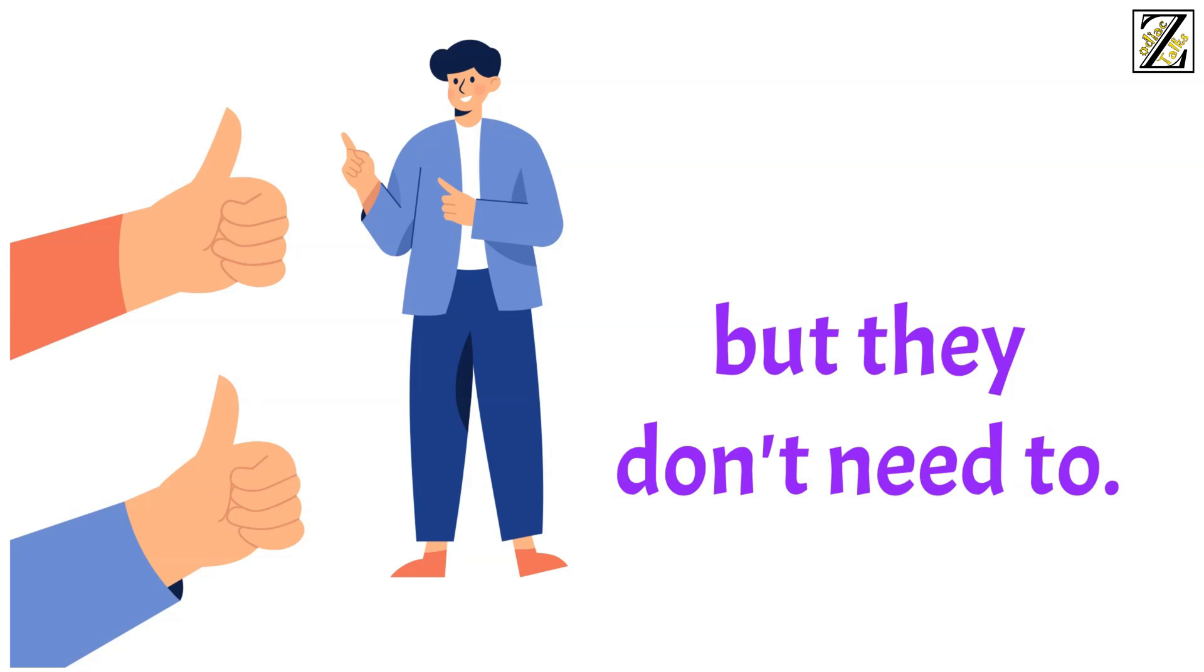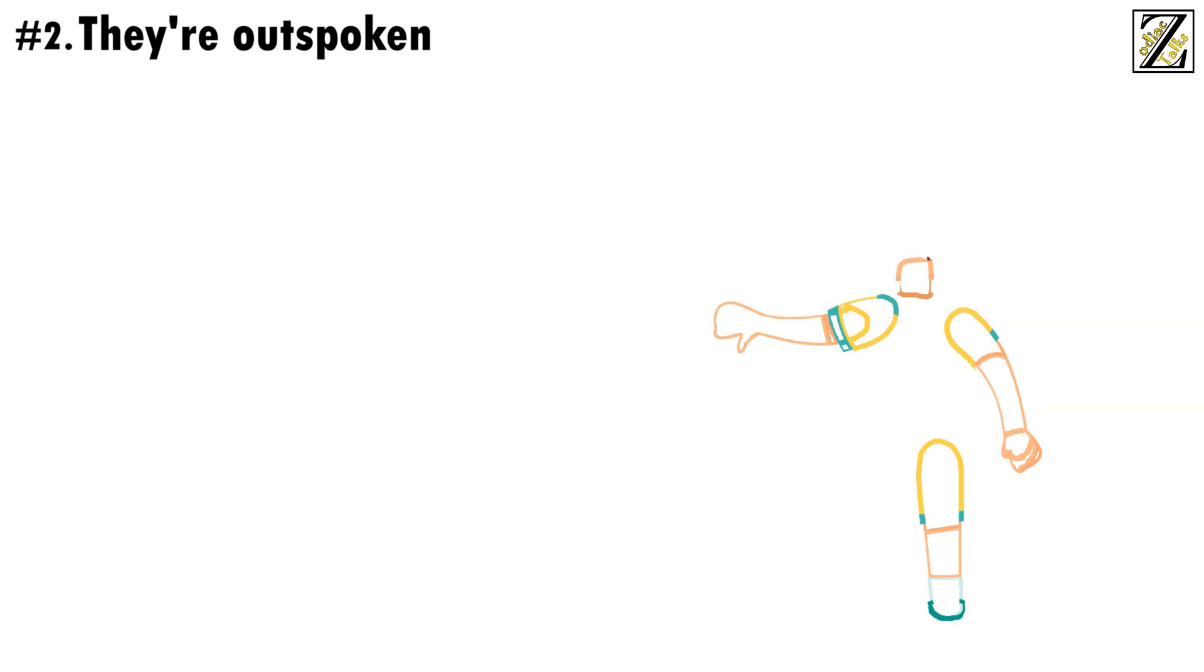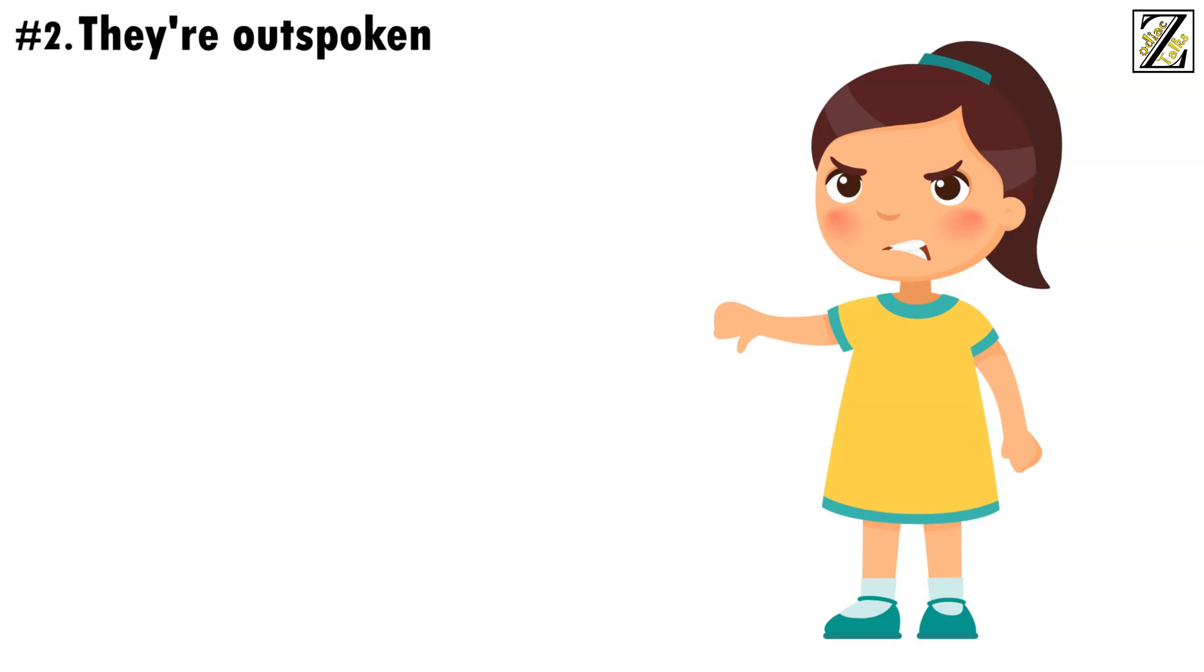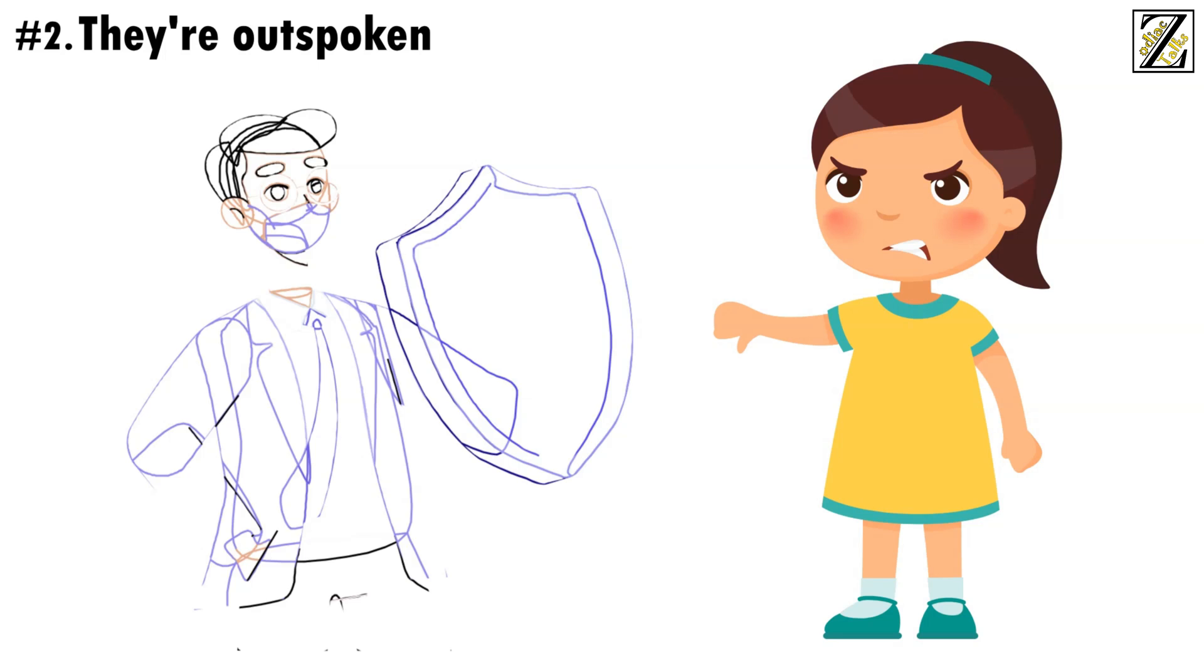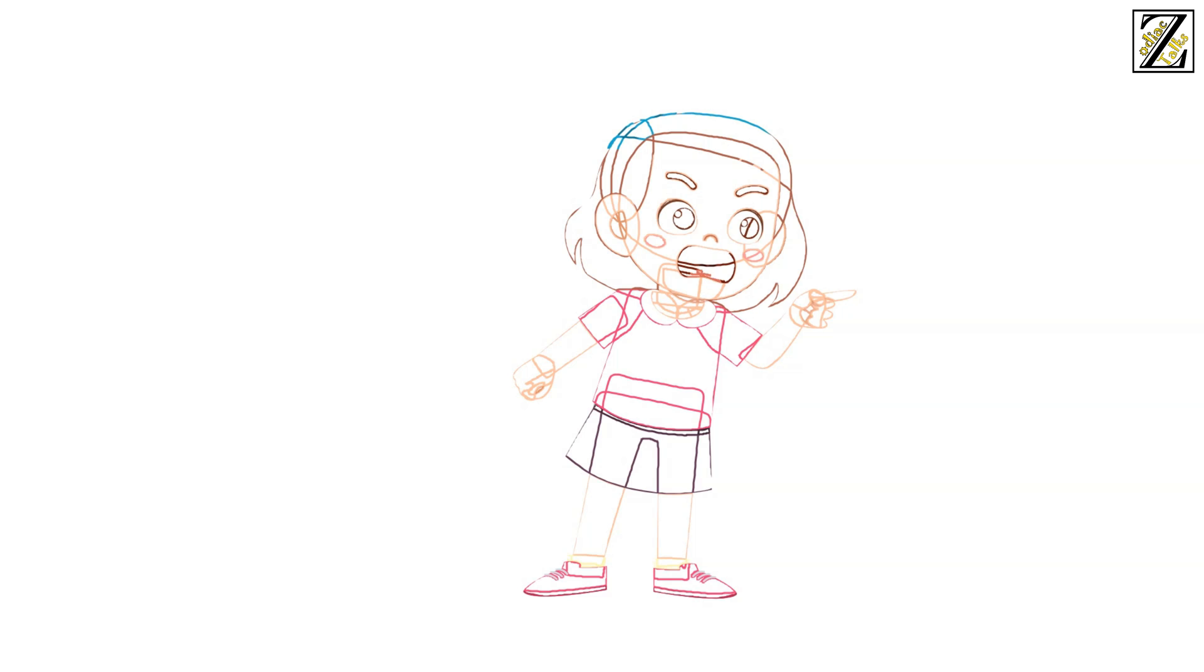Number 2, They're outspoken. Geminis are quick to express themselves and talk their mind, even when it's not welcome. What's more, they aren't afraid to talk for others, coming to other people's defense and speaking injustices again. It's no wonder Geminis can make good activists and lawyers. They're not only amazing at arguing, but they also enjoy it.